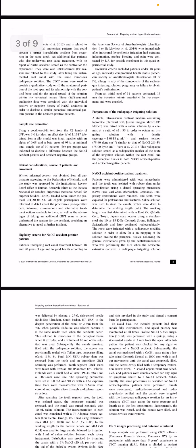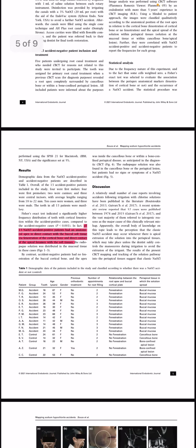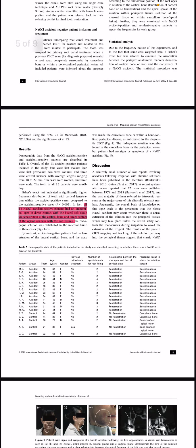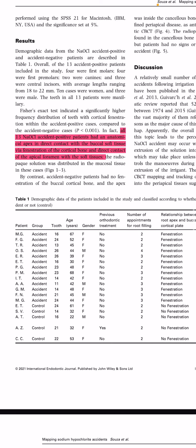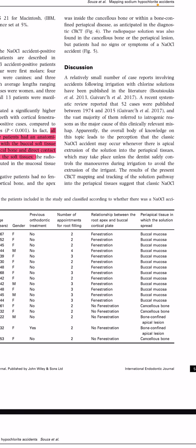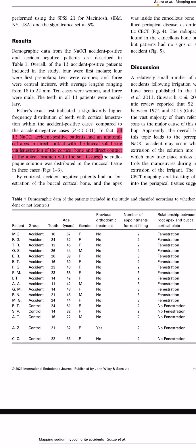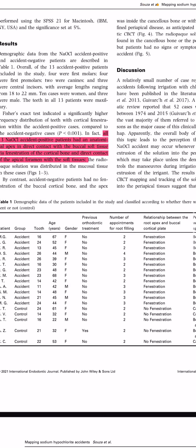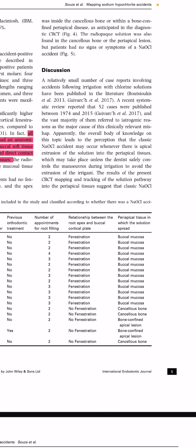Interestingly, in the results shown in Table 1, all 13 patients who had an accident showed fenestration of the buccal cortical plate, and the periapical tissue in which the solution spread was the buccal mucosa. However, in the control cases, there was no fenestration; the contact was confined to cancellous bone in an apical lesion.